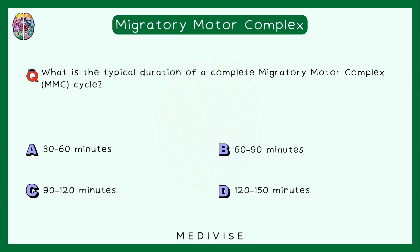What is the typical duration of a complete migratory motor complex cycle — 30 to 60 minutes, 60 to 90, 90 to 120, or 120 to 150 minutes? The correct answer is 90 to 120 minutes.